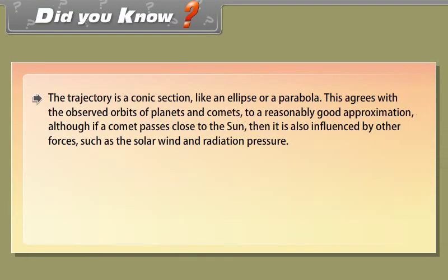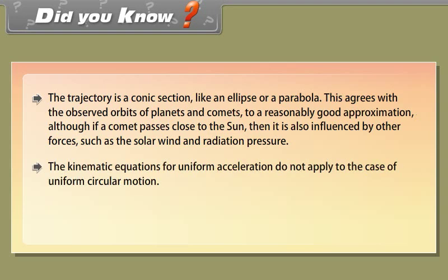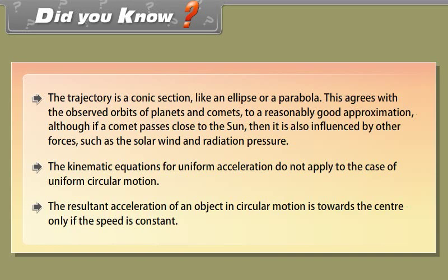Did you know? The trajectory is a conic section like an ellipse or a parabola, which agrees with the observed orbits of planets and comets to a reasonably good approximation. Although if a comet passes close to the sun, it is also influenced by other forces such as the solar wind and radiation pressure. The kinematic equations for uniform acceleration do not apply to uniform circular motion. The resultant acceleration of an object in circular motion is towards the center only if the speed is constant.